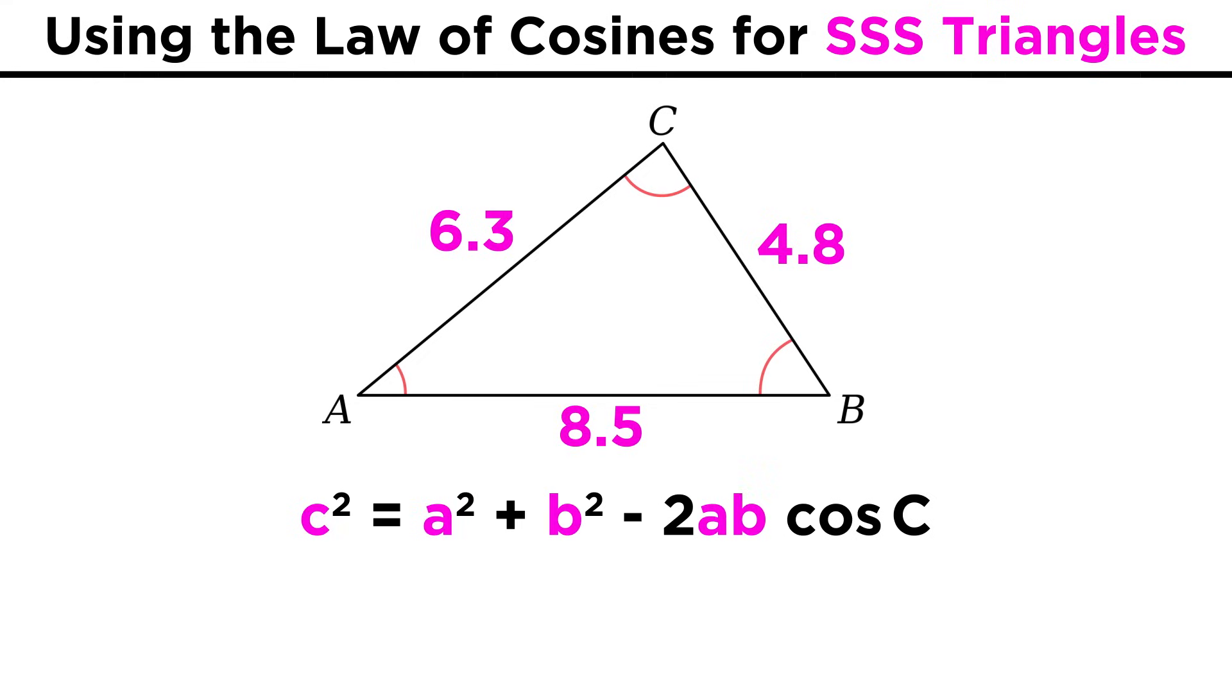This is because if we know all three side lengths, we can solve for any one of the angles. The easiest way to do this is to solve for the angle that is opposite the longest side. So for this triangle, let's call the longest side C. Using the general formula, let's solve for angle C.